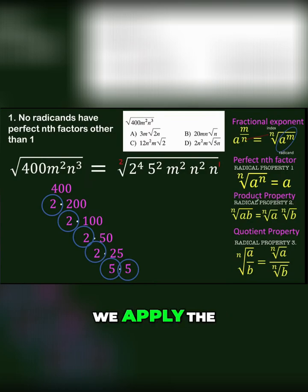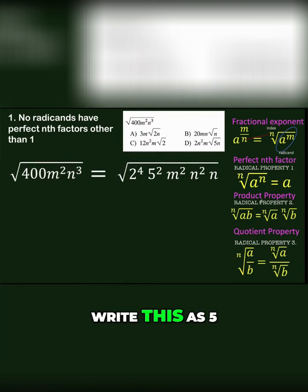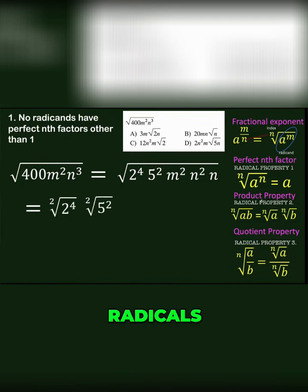To simplify, we apply the product property to write this as five separate radicals, each corresponding to each factor in the radicand.